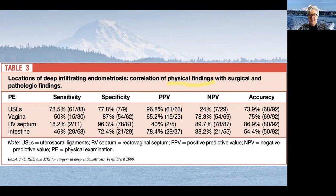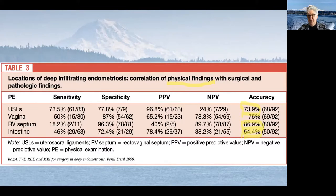Physical exam for endometriosis on the uterosacral ligaments has about a 74% diagnostic accuracy. For endo in the rectovaginal septum there's about an 86% accuracy, and for endometriosis in the intestine about a 54% accuracy — which is actually better than I thought it was going to be, because on physical exam a lot of lesions on the rectum are up too high for you to pick up with your hands.